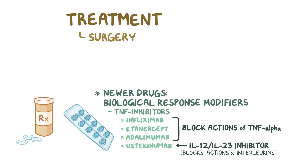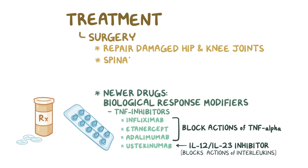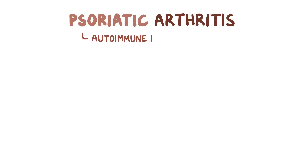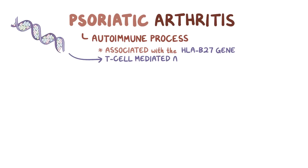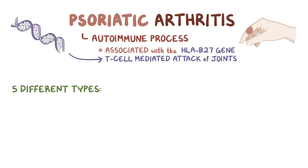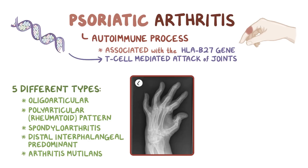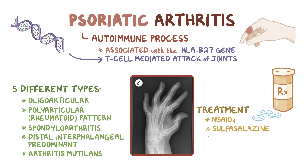Finally, surgery can be performed to repair damaged hip and knee joints, but spinal surgery is typically considered risky and is rarely performed. As a quick recap: psoriatic arthritis is an autoimmune process, often associated with the HLA-B27 gene, which causes a T-cell mediated attack of the joints in people with psoriasis. There are five different types: oligoarticular, polyarticular or rheumatoid pattern, spondyloarthritis, distal interphalangeal predominant, and arthritis mutilans. Treatment includes NSAIDs, sulfasalazine, and methotrexate, as well as newer biological response modifiers.